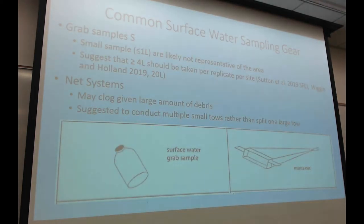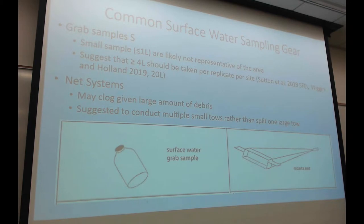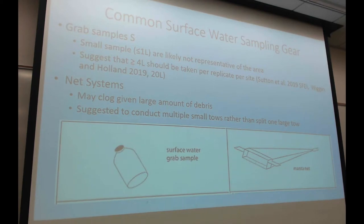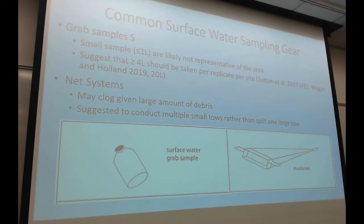We also have to think about what volume we're actually sampling. Most people agree that one liter is not enough unless you're stratifying really well across your system. The group in San Francisco is starting to say four liters or more is okay. From work we were doing in the bay from the Norwegian area, we found less than one particle per liter in that study, so we decided to do 20 liters to try to make sure we got at least 20 particles — that's where the 20 came from. We were working with much smaller sizes, and it was one of the first studies to go that low.